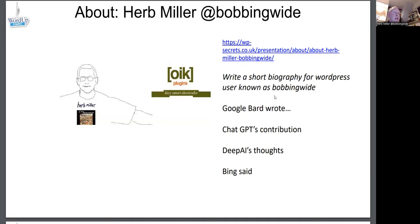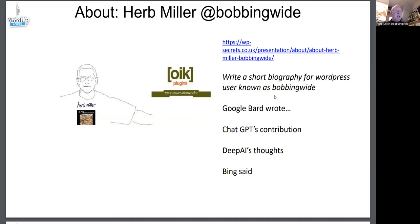I asked Google Bard, ChatGPT, DeepAI, and Bing to write a short biography about me. They wrote something — some of it's right and some of it's invented. That's what AI does: it has hallucinations, it makes things up. You'll see that if you go and visit the About Me page.